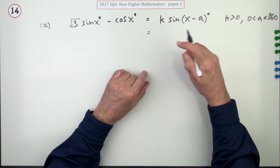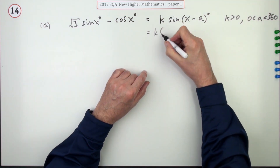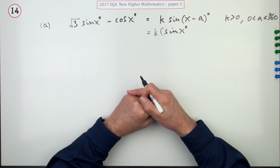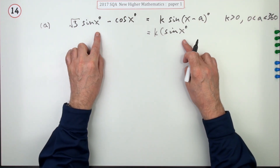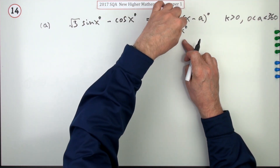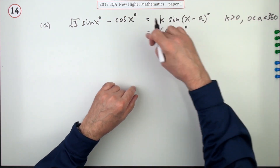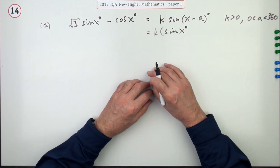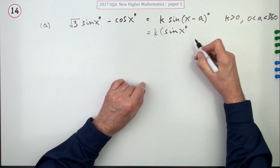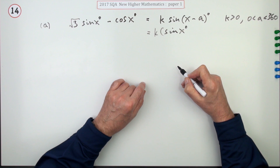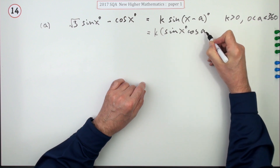It'll be k times — that sign will be sine x. Here's a thorny issue: it's in degrees, which means strictly speaking you should be putting a little degree sign wherever you mention the variable being operated on by a function like sine or cos. However, luckily the marking scheme says do not penalise the omission of degree signs, but strictly speaking they should be there because without a degree sign it means radians.